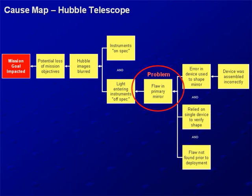The reason we have this as an example in this short video is because on the Hubble in 1993, they fixed the instruments to match the bad mirror. So the change was not to the mirror — the change was to the instruments that were originally made correctly. They changed the instruments to match the flawed mirror, and that's how it's operated since 1993, and the images are not blurry.